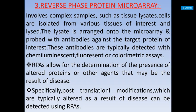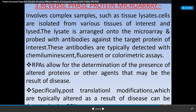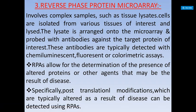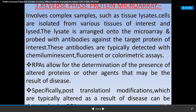The third type is reverse phase protein microarray. In this type, tissue lysate is used. The lysate is arranged onto the microarray and then probed with antibodies against the target protein of interest — similar to the secondary antibody probing used in analytical microarray. The lysate of tissues is arranged on the microarray and then probed with antibodies against the target of interest, and these antibodies are typically detected with a label.